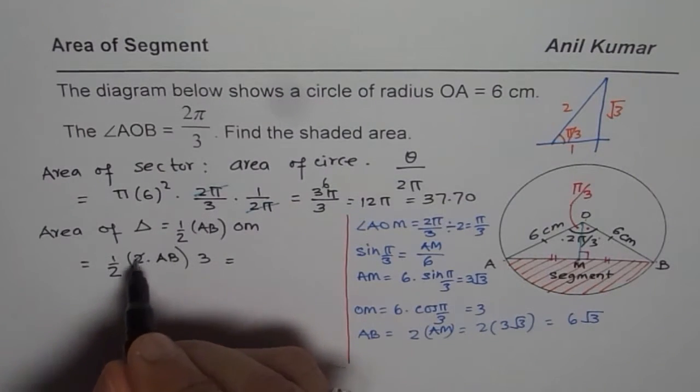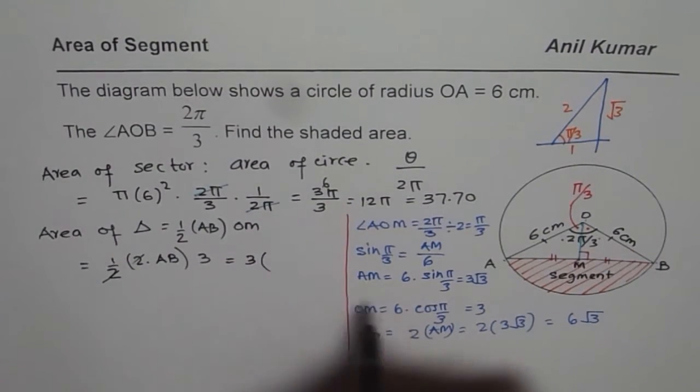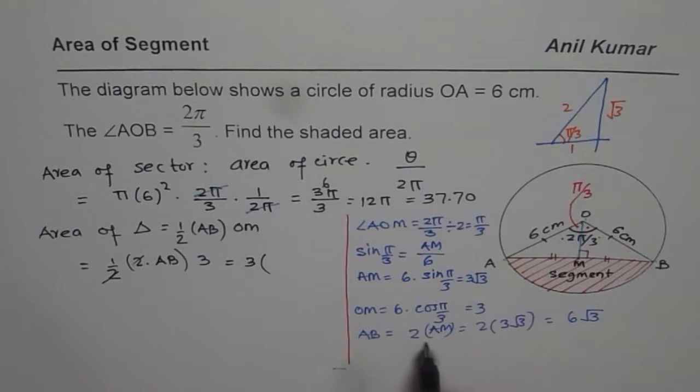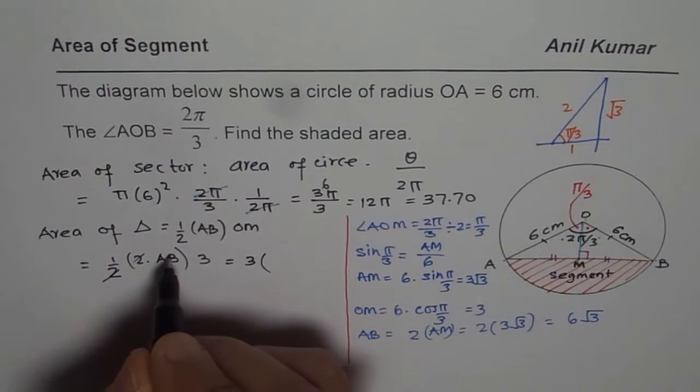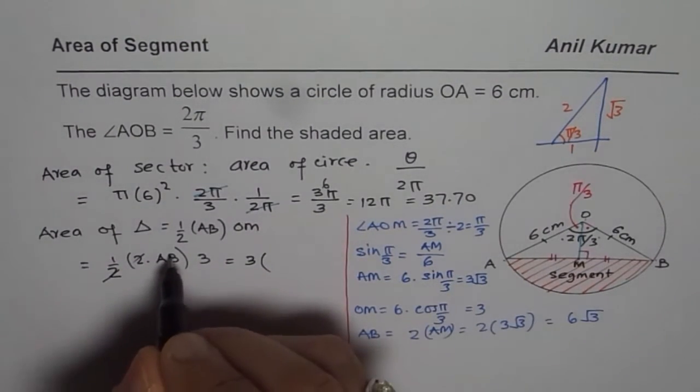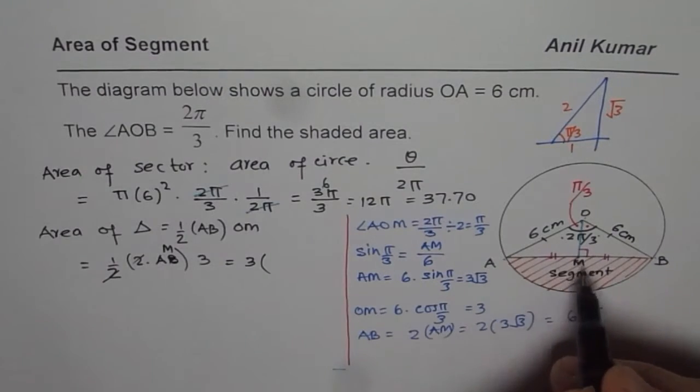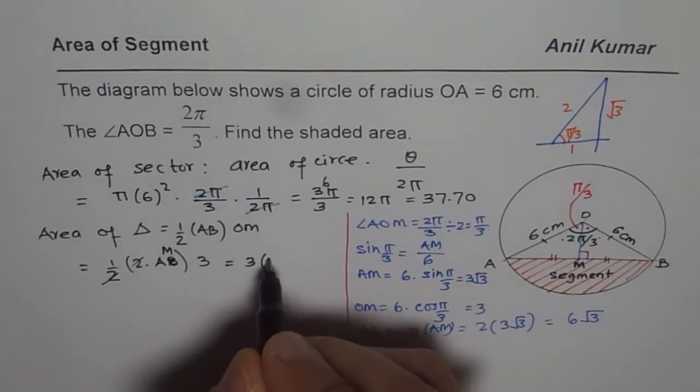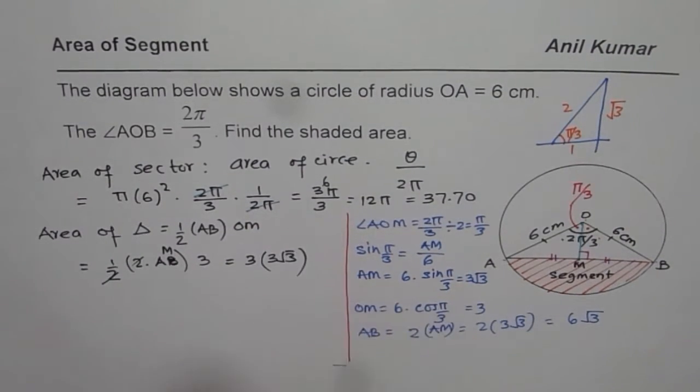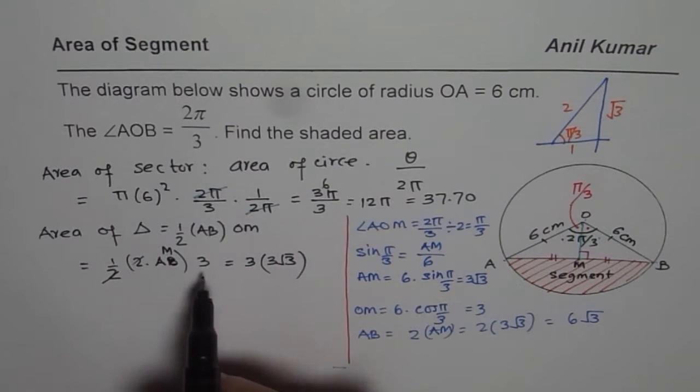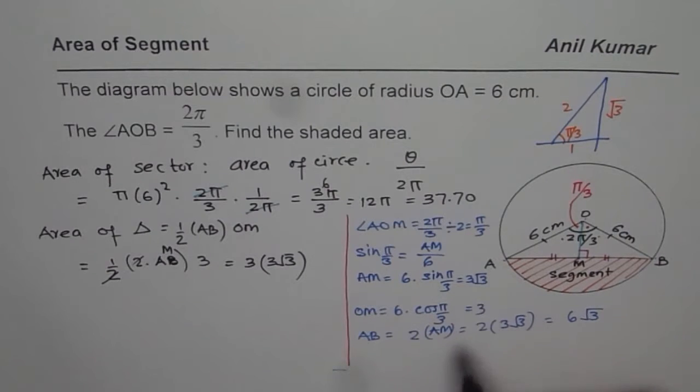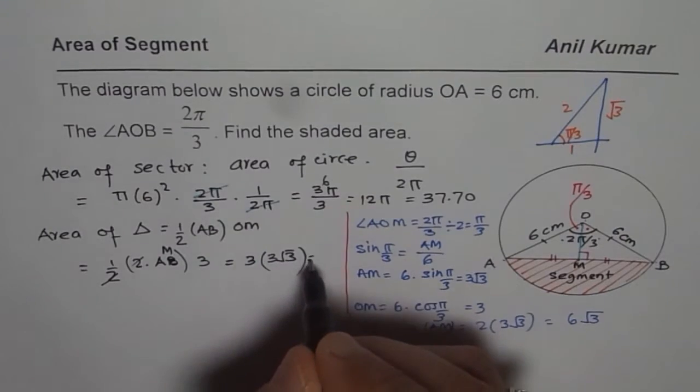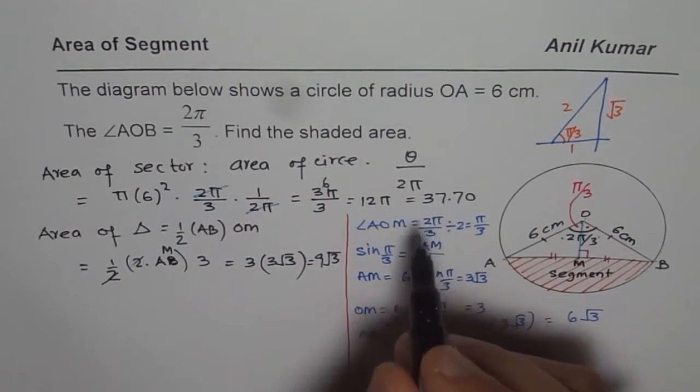So basically 2 and 2 cancels so 3 times AM, I mean this is 2 times AM. So AM is we found 3 square root 3. So basically it is 3 times 3 square root 3, product of these 2. So 9 square root 3, so we can write this as 9 square root 3 or its decimal value.